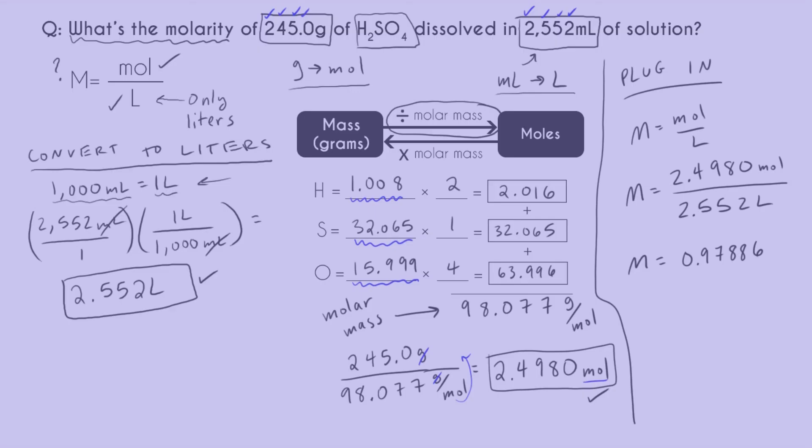Before sig figs and units, I have 0.97886. Now let's go through and just do a sig fig double check. I have from up here, four sig figs, from up here, also four sig figs. Now just checking my work really quickly to make sure I don't have to change anything.